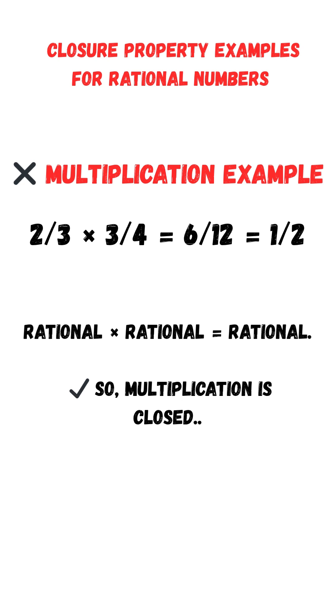Multiplication example: 2 thirds times 3 fourths equals 6 twelfths, equals 1 half. Rational times rational equals rational. So, multiplication is also closed.